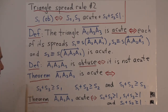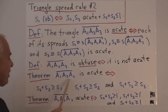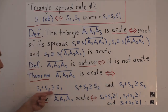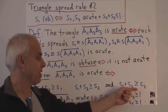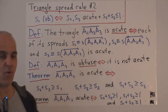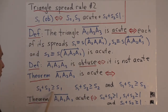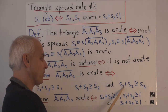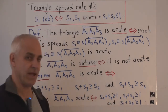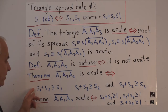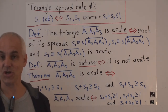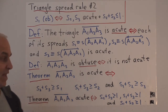Here is a restatement of what we've already determined: the triangle A1, A2, A3 is acute precisely when, in terms of the three spreads (not the three quadrances), S2 plus S3 is bigger than or equal to S1, S1 plus S3 is bigger than or equal to S2, and S1 plus S2 is bigger than or equal to S3. This is a direct consequence of the reformulation of the definition of acuteness.